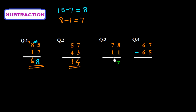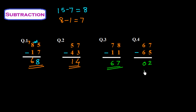In question number 4 we have to subtract 65 from 67: 7 minus 5 is 2 and 6 minus 6 is 0, so the answer is simply 2.